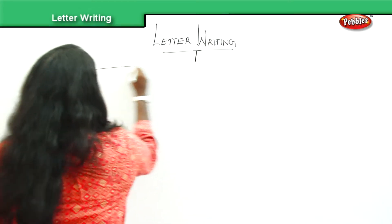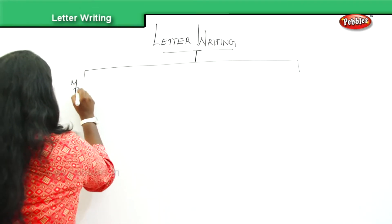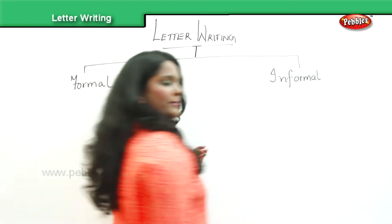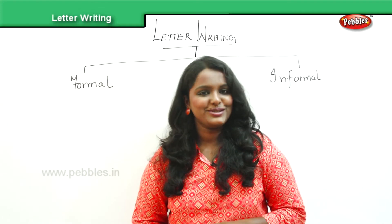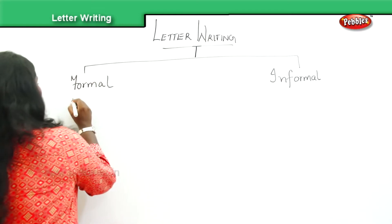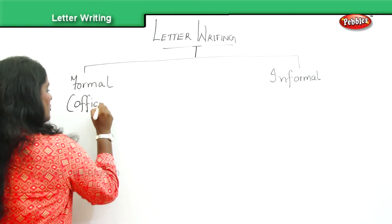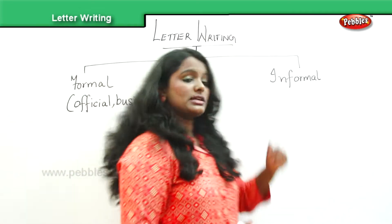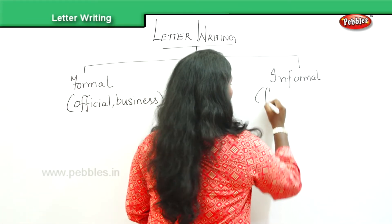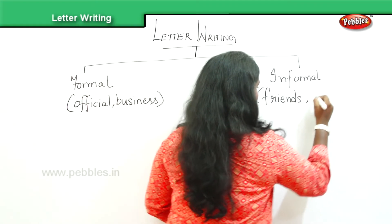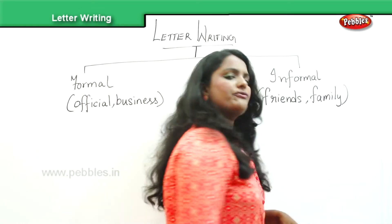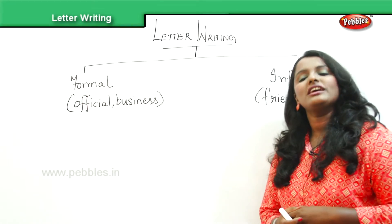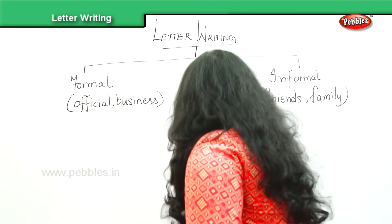The types of letters you are already aware of are formal and informal. To whom do you write a formal letter? Not to friends — it is an official letter or for business purposes. When it comes to an informal letter, you write to your friends and family. If you are clear about who receives each type, you will have no confusion when it comes to the layout, because both letters have their unique layouts.